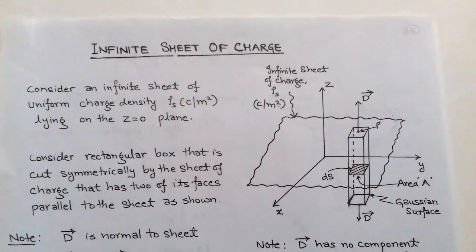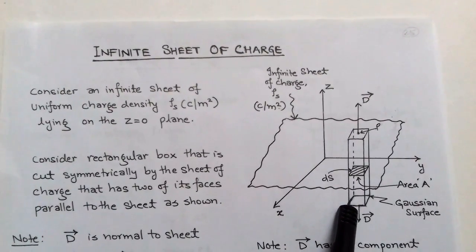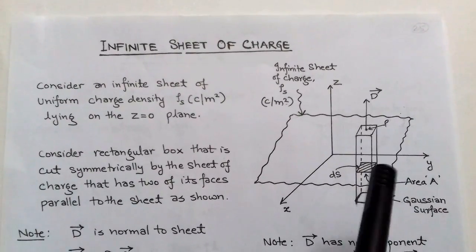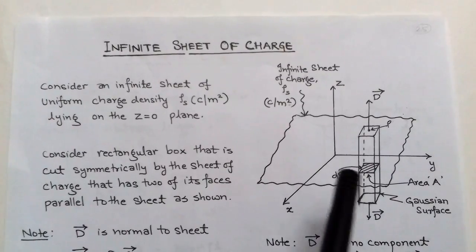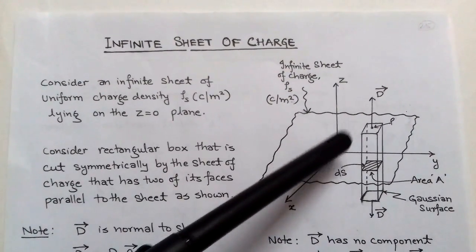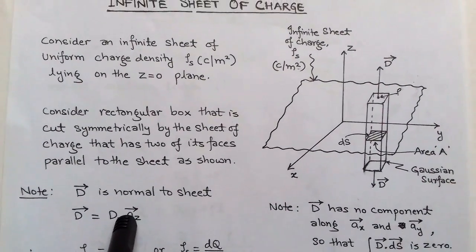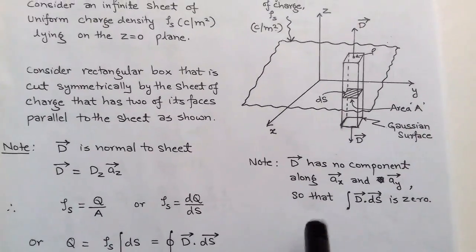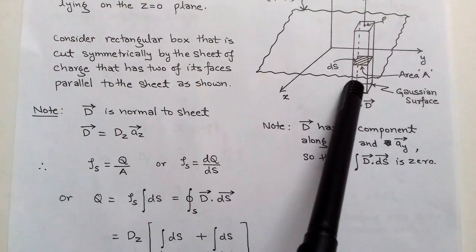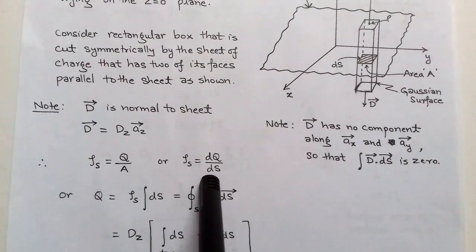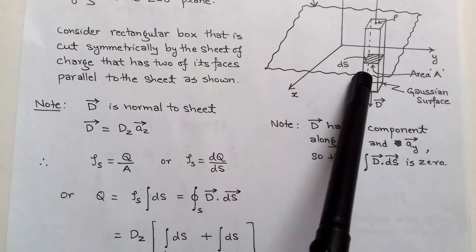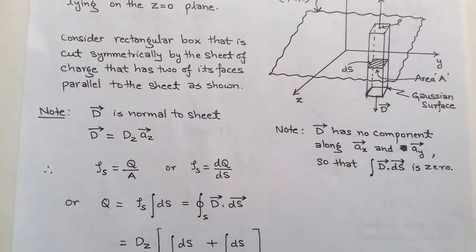The assumed Gaussian surface is a rectangular box with two parallel faces. The electric flux density D has no component along â_x or â_y — it has only a z-component, because the sheet is situated on the xy-plane and its field direction is towards z. So D = D_z â_z. Also, ρs = Q/A where A is the area of top and bottom faces, or equivalently ρs = dQ/dS where dS is the differential surface.